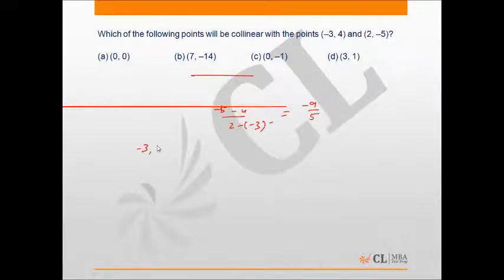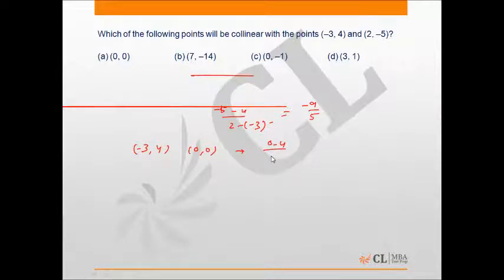Now take the first point out of the two given points and take it along the given options. When we take the first option, the slope will be (0 - 4) upon (0 - (-3)), which is not equal to -9/5. Therefore option A is not the answer.